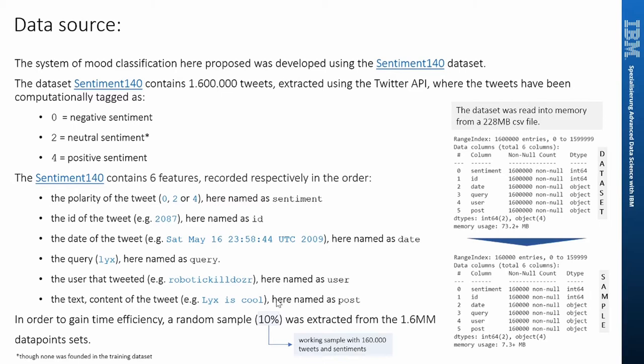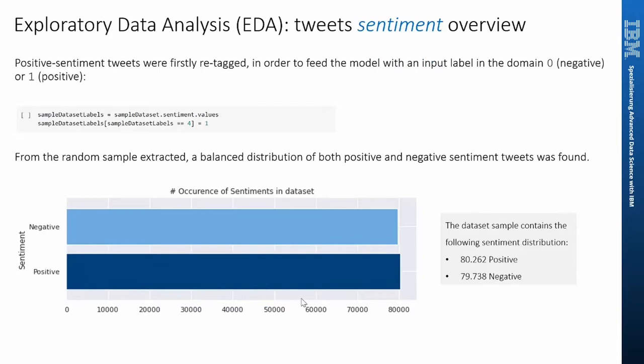An important point here is that to gain more time efficiency, the model was first developed using a random sample of 10% from the original dataset. Once we have our random sample, we will start with some exploratory analysis. The charts below show that our dataset contains a balanced distribution of both positive and negative sentiment tweets.